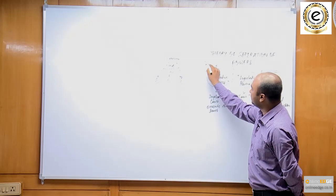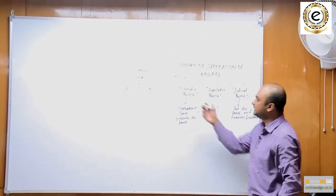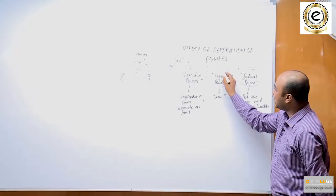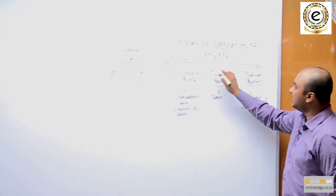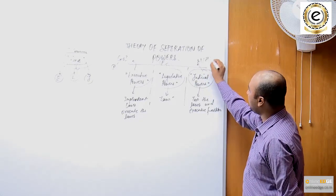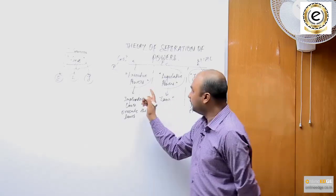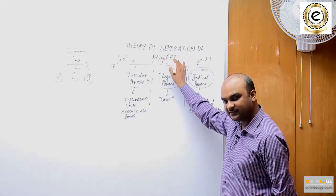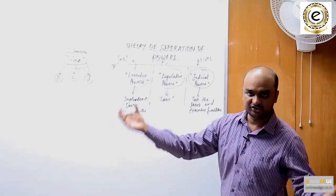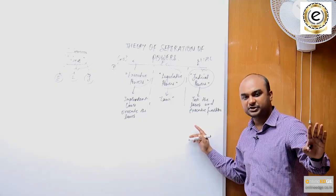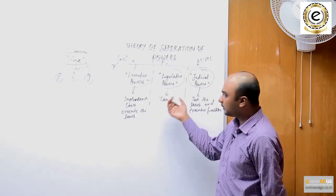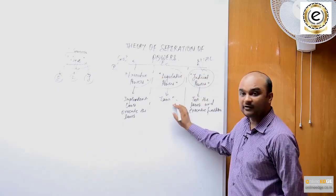For example, the executive powers are vested with the government of India or the government of any state, headed by the President of India — or in a state government, headed by the governor. Legislative powers are invested in the parliament if it is the case of the union, and in the legislative assemblies in the case of a state. Judicial powers are invested in the Supreme Court, High Court and other lower courts. The legislature's job is to make laws, and such laws must be in conformity with the constitution — they should not violate any basic provisions of the constitution.